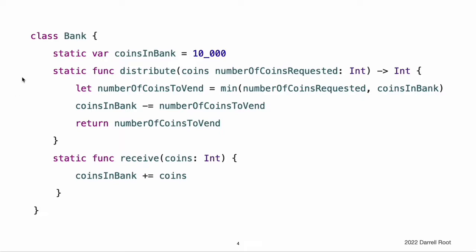Bank keeps track of the current number of coins it holds with its coinsInBank property. It also offers two methods, distribute coins and receive coins, to handle the distribution and collection of coins. The distribute coins method checks that there are enough coins in the bank before distributing them.